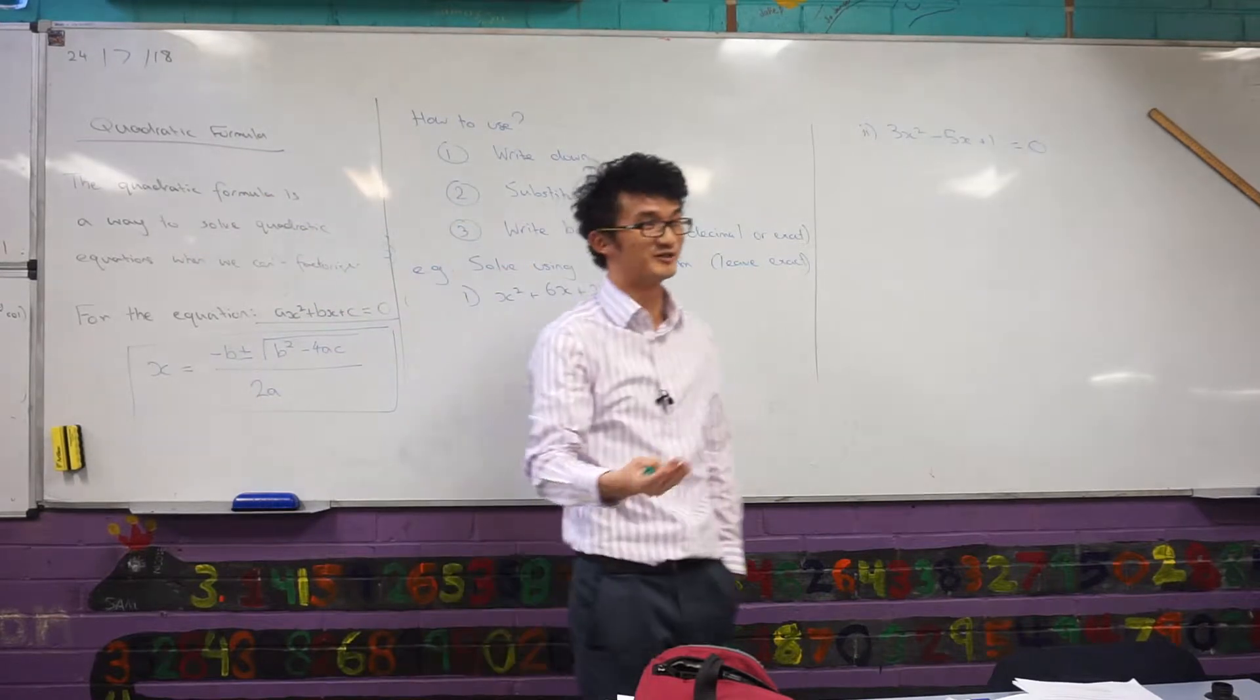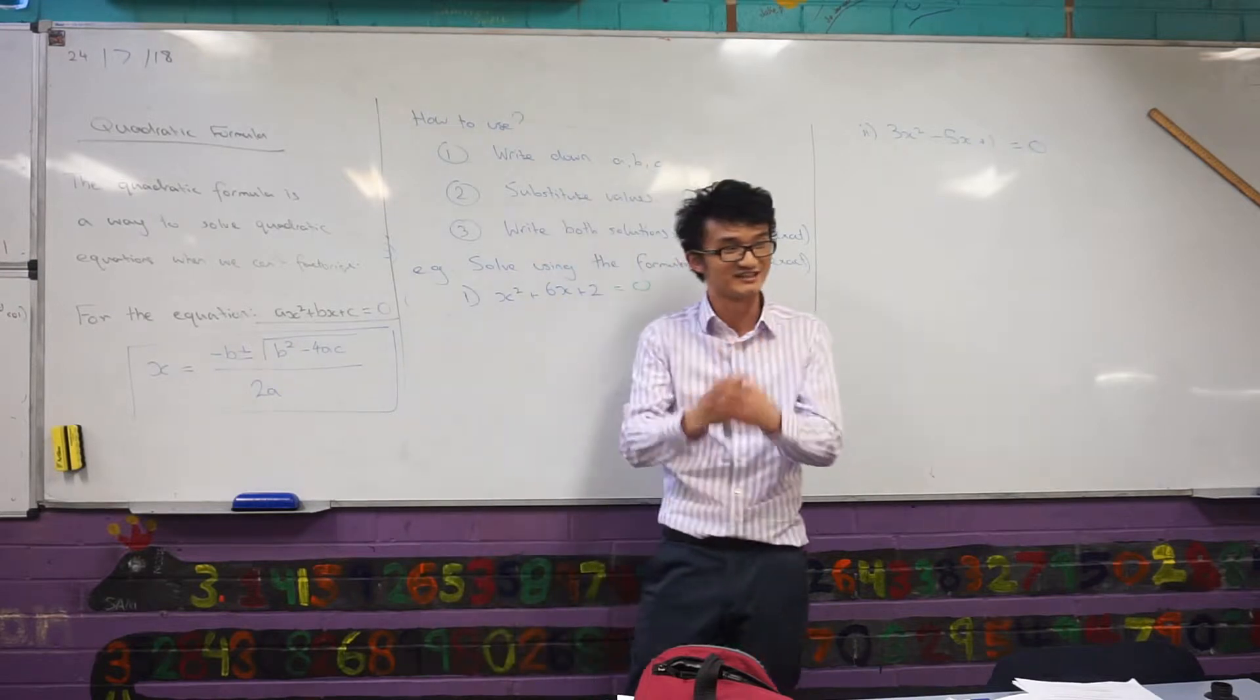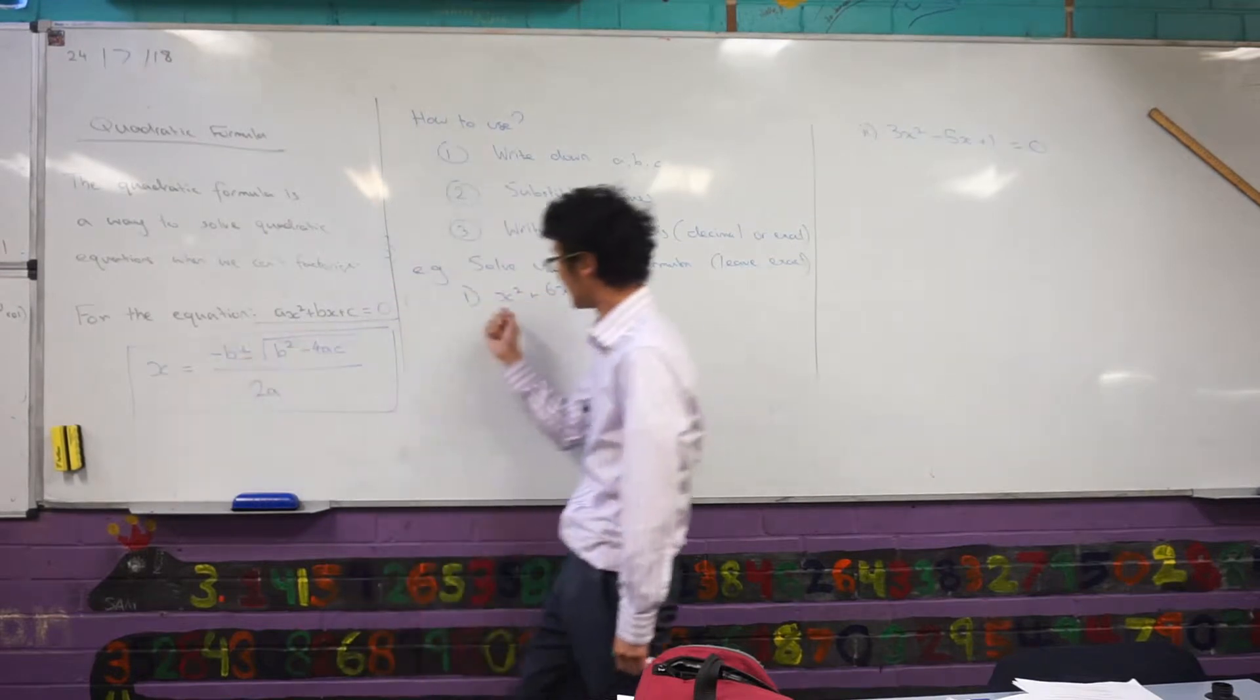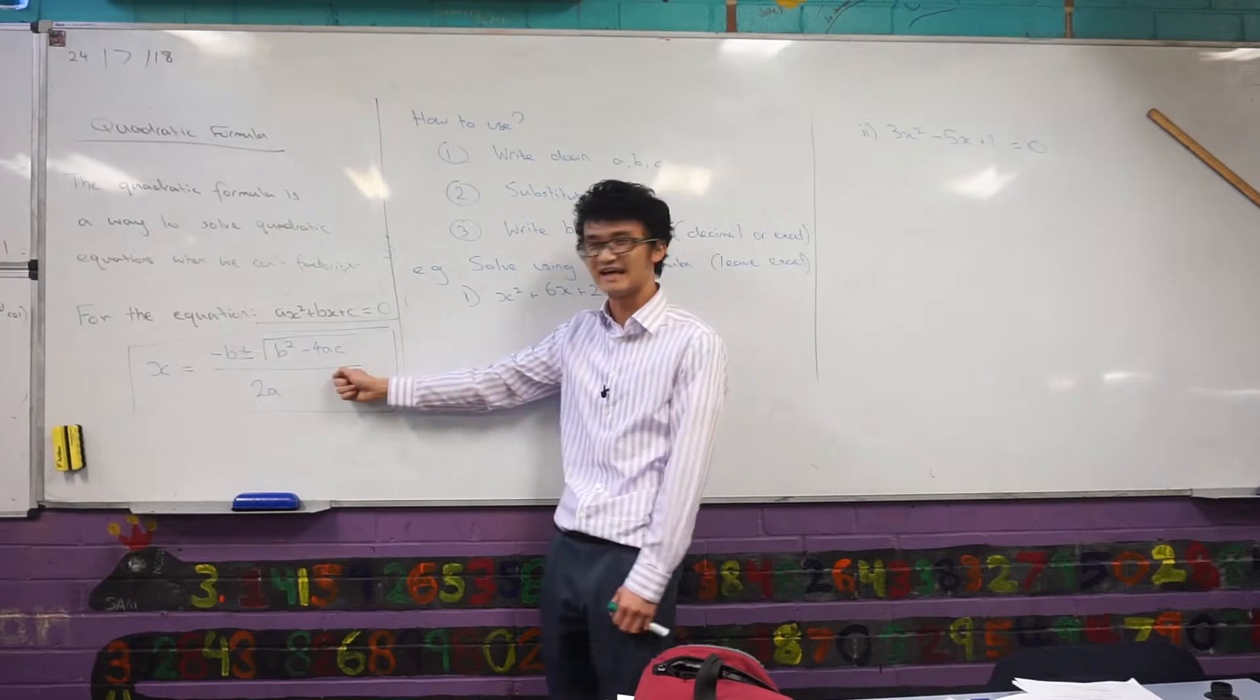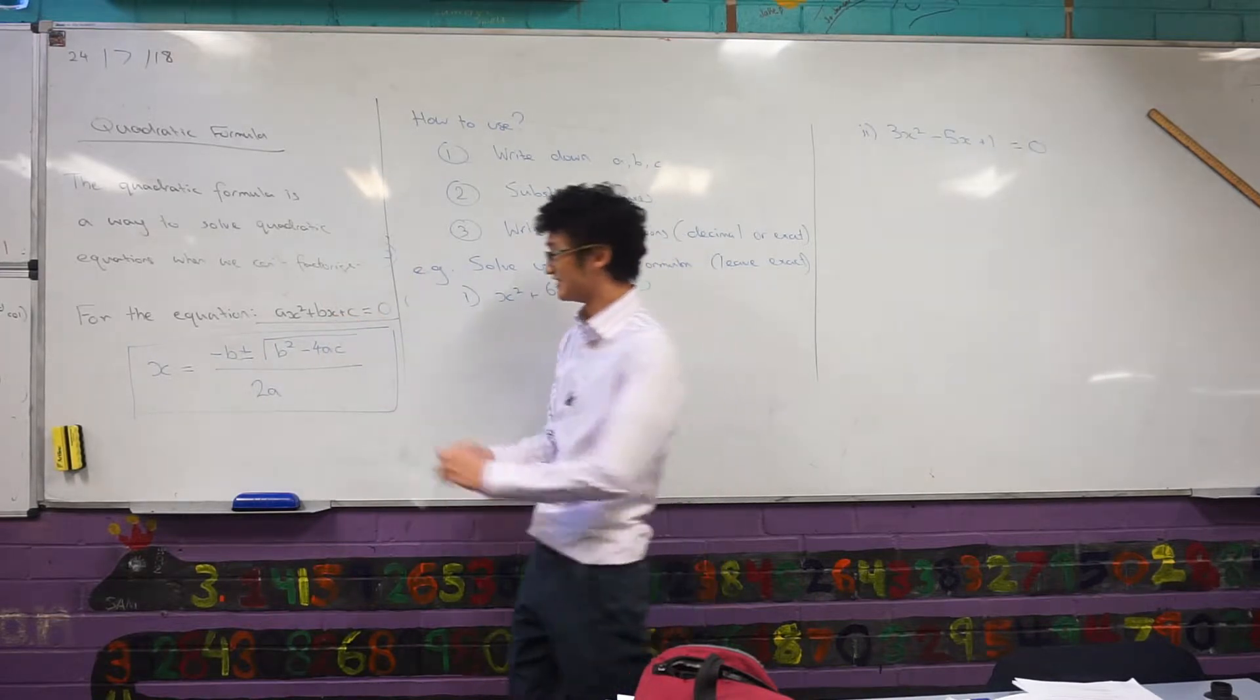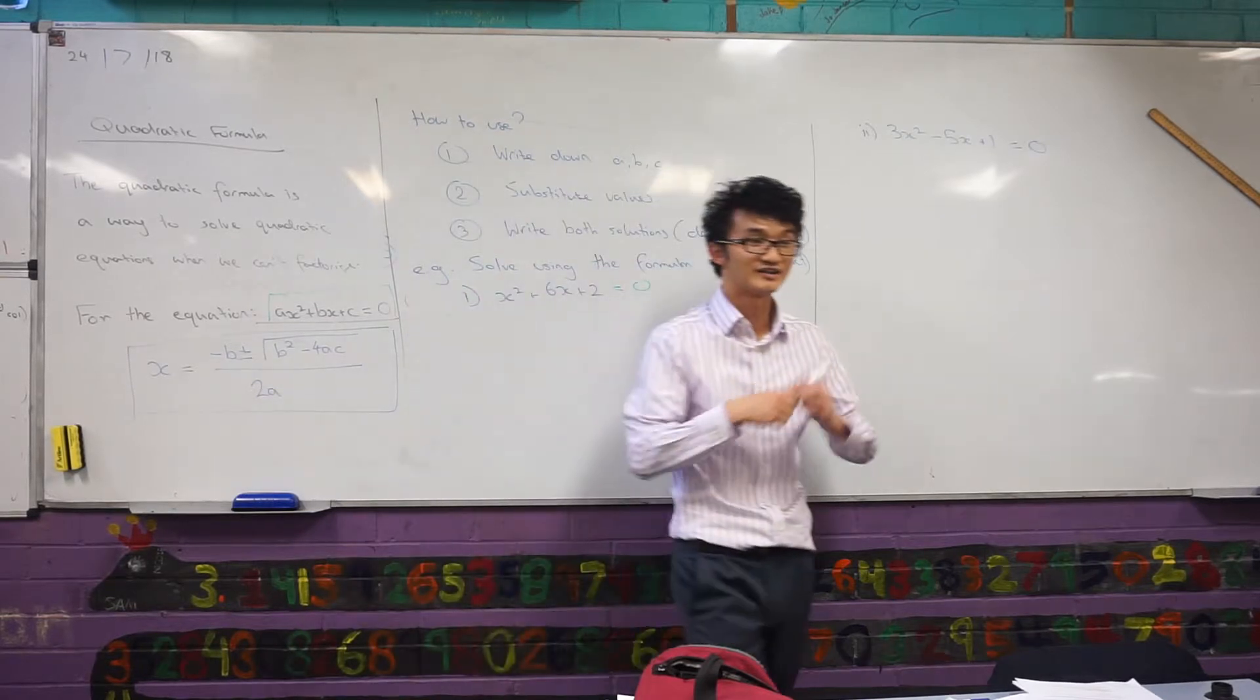It's called the quadratic formula and it's in this box here. It looks all big and scary, but let me just break down what this actually is. First of all, this is just a formula. We can substitute values in there and that's going to give me what x is equal to to make this true. Where do these a, b, and c values come from?